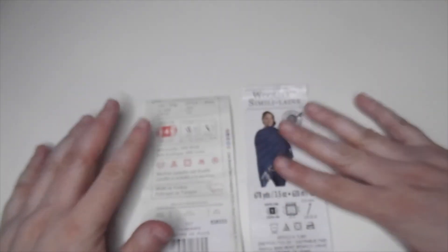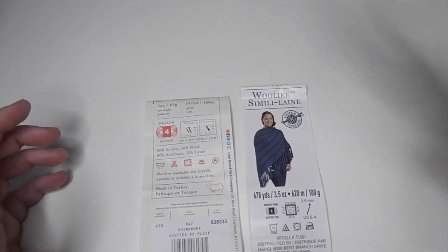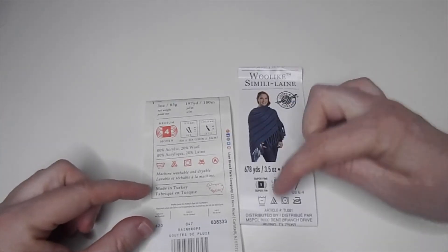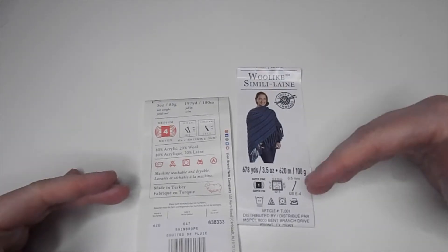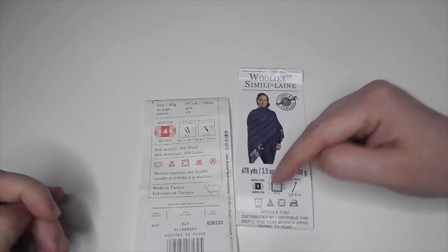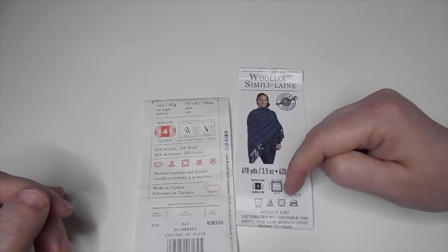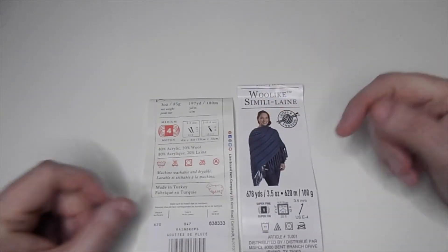So that is the normal gauge. Since everybody's gauge is different, that is how you know. This is normally what it's supposed to be, but you can be a little bit different. You can have 34 stitches for 10 centimeters or 30 stitches. It depends on how you knit or crochet.